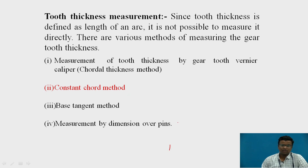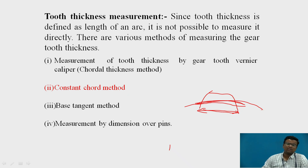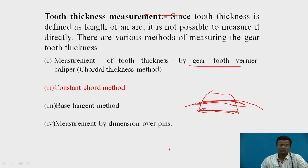For a particular tooth, there is an arc dimension. It is really difficult to measure the arc dimension or distance. A linear distance is easy to measure, but how do we measure the distance along an arc? For that, there are different methods: there is the chordal thickness method where the gear tooth vernier caliper is used; there is the constant chord method; the base tangent method; and measurement by dimension over pins. In most industries, the gear tooth vernier caliper is used because it is user-friendly. There are equations for chordal thickness and chordal addendum with which you can measure the tooth thickness.